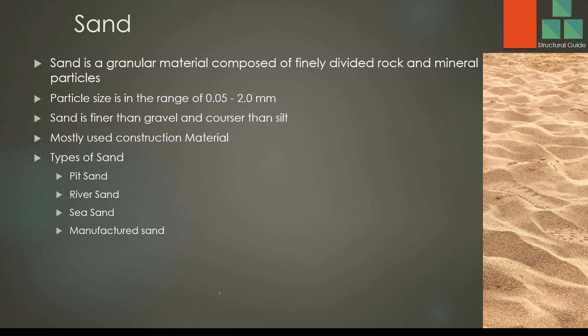Sand. I think we all know what sand is — there is not much to discuss, but we should record it here as a construction material. Sand is one of the most used construction materials. Sand is a granular material composed of finely divided rock and mineral particles. Its particle size is in the range of 0.05 to 2 mm. Sand is finer than gravel and coarser than silt. There are many types of sand: pit sand, river sand, sea sand, and manufactured sand.